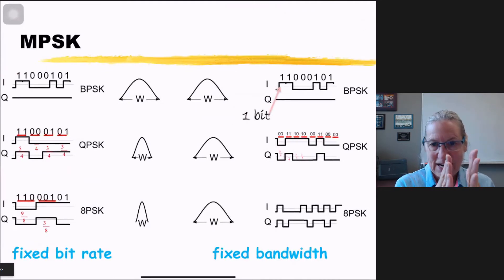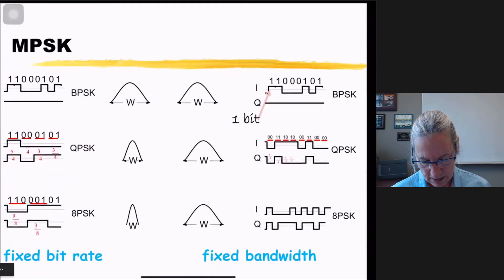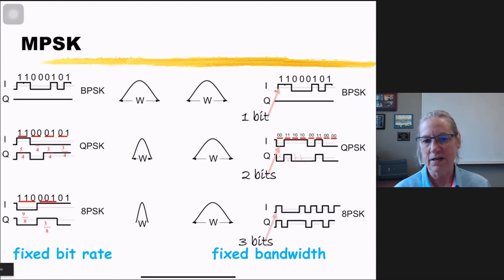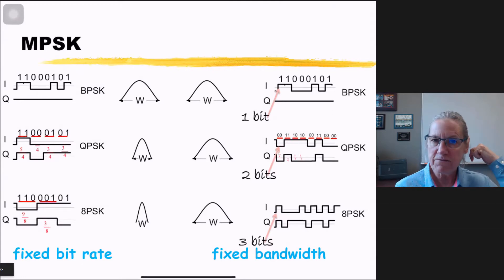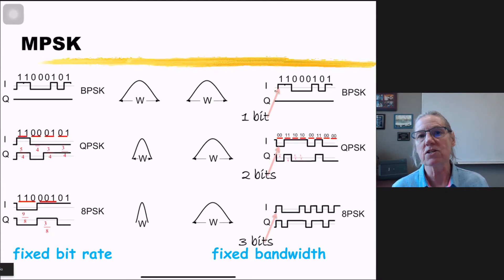With fixed bandwidth, in the same time slot that previously carried one bit, QPSK sends two bits, and 8PSK sends three bits. The bandwidth is fixed but the amount of information increases. That's the two sides of spectral efficiency: either send the same data rate using less spectrum, or fix the spectrum and send faster data rates as M increases.